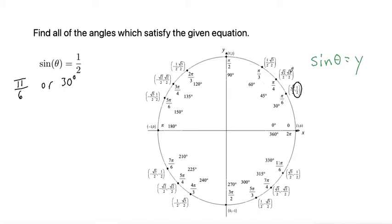And let's keep going around until we find another 1 half on the y. Here's another 1 half on the y-coordinate. So that would be 5 pi over 6 for radians or 150 degrees.